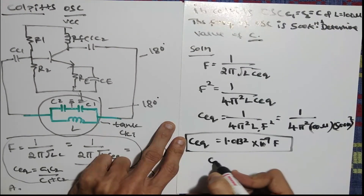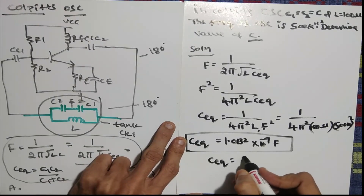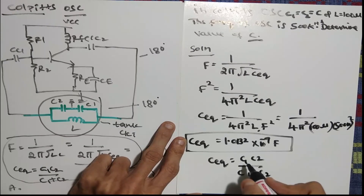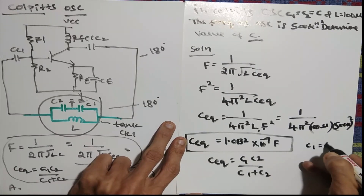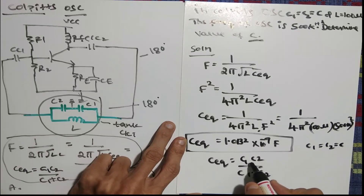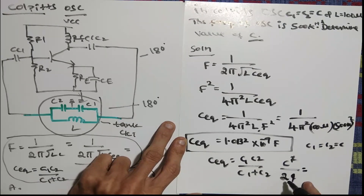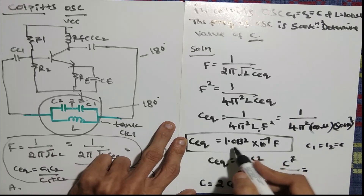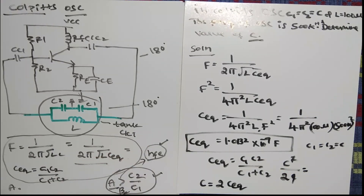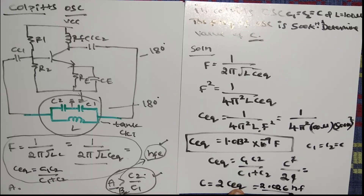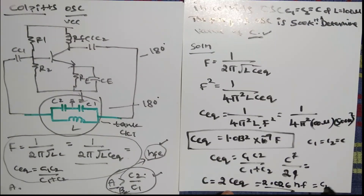Since C1 equals C2 equals C, C equivalent equals C into C divided by C plus C equals C squared divided by 2C equals C divided by 2. Therefore C equals 2 into C equivalent. Substituting the C equivalent value gives the final answer: C equals 2.026 nanofarad, and this is the value of both C1 and C2.